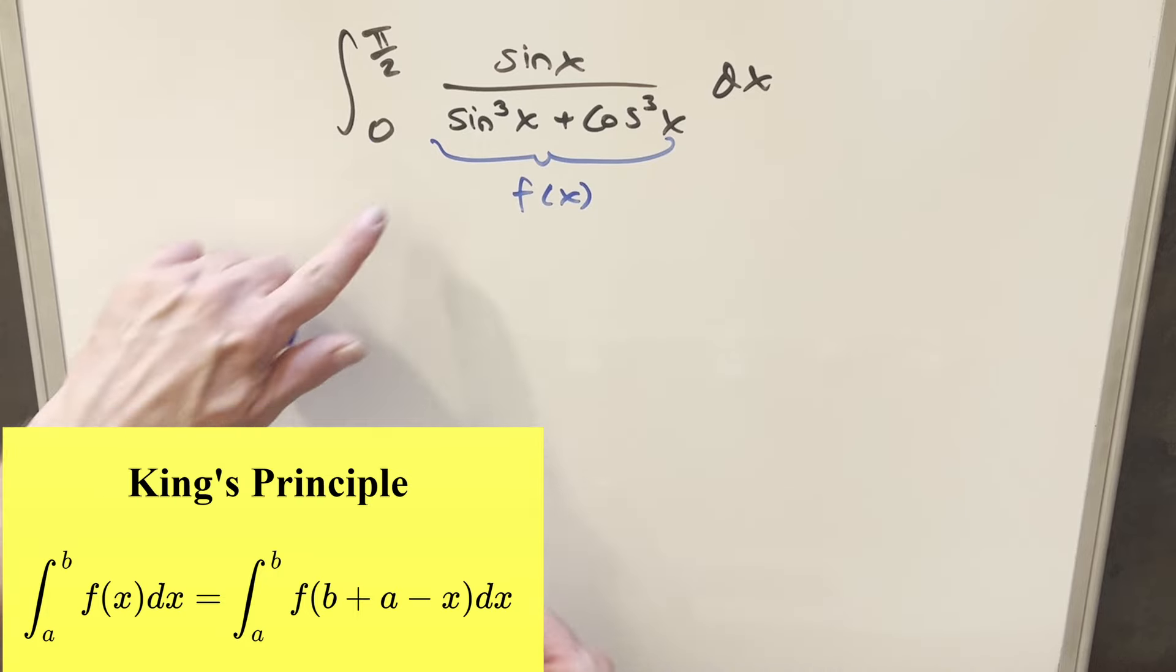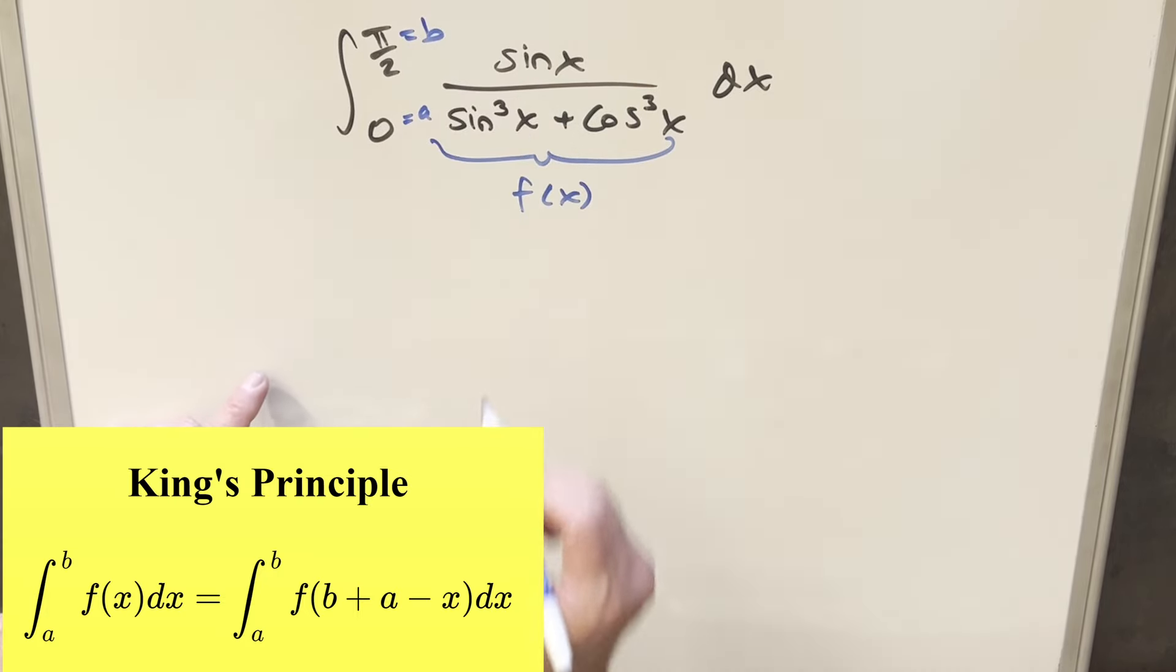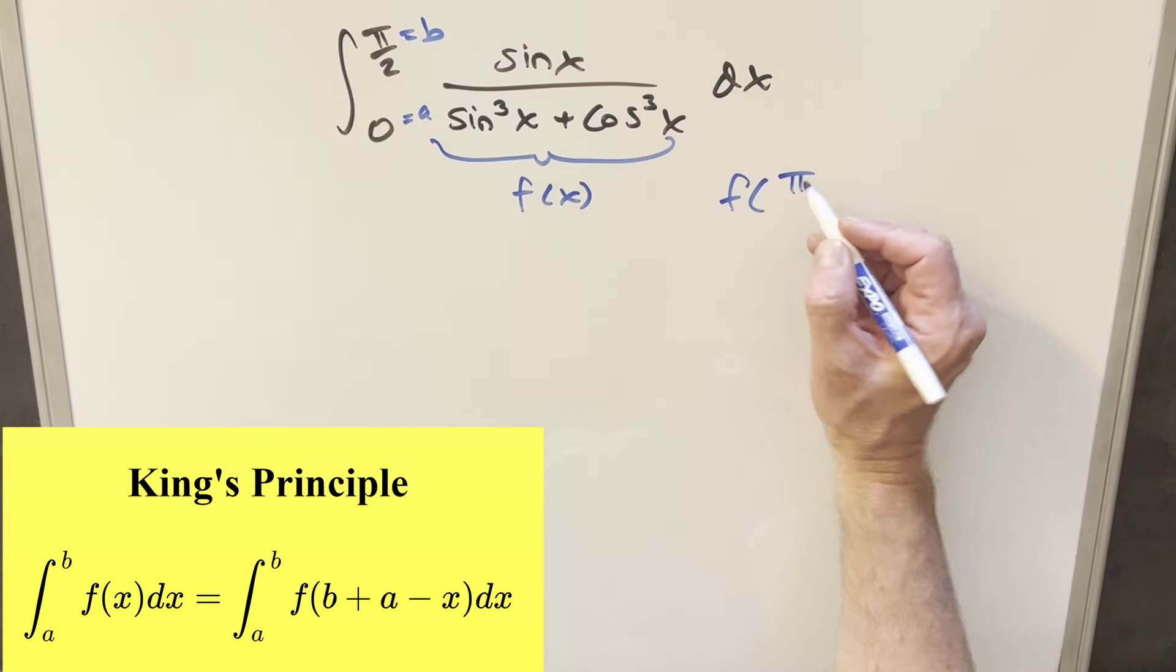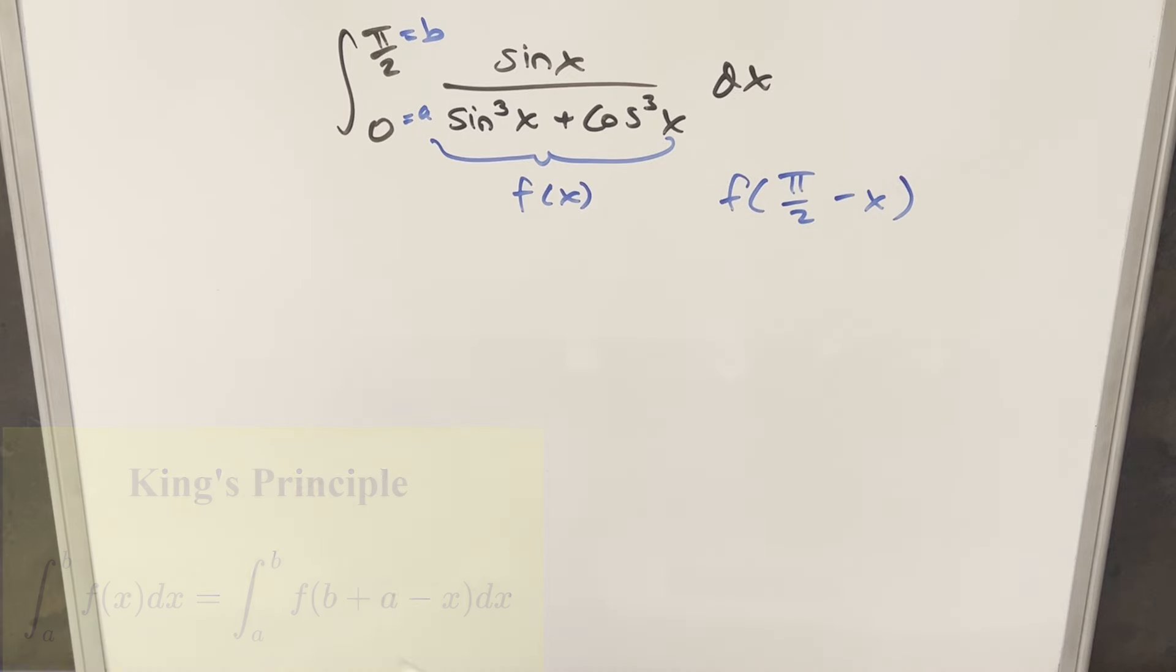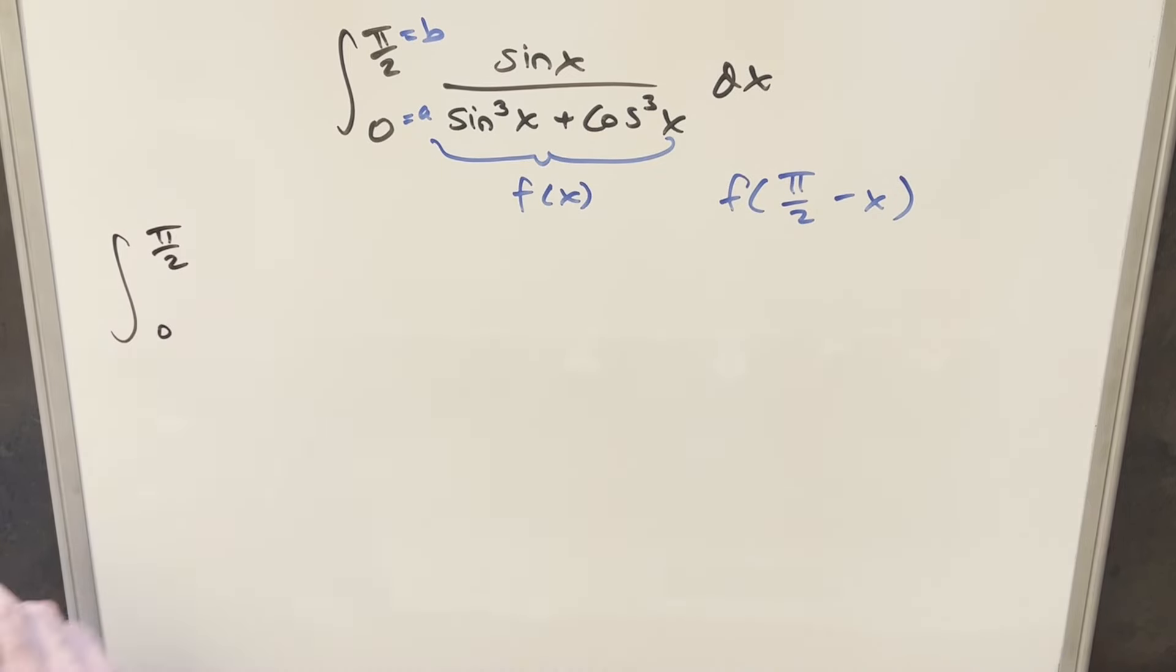And what we need to do for our King's Principle formula is add the balance together. This will be our a value, this will be our b value. So what we need to find is f of adding them together, π/2 - x. So going ahead with this, what's going to happen? The balance will stay the same. So we're still going from 0 to π/2.